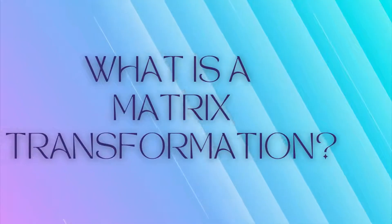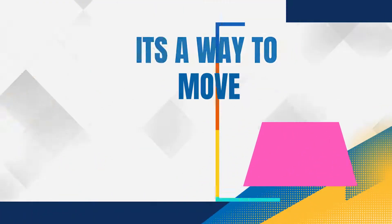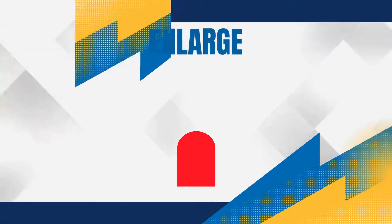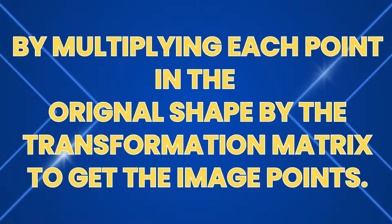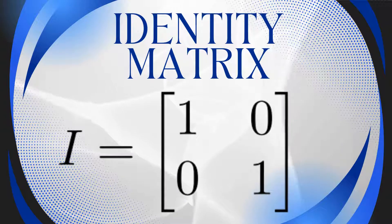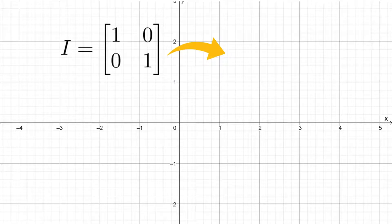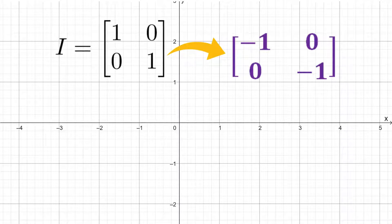What exactly is a matrix transformation? Simply put, it's a way to move, rotate, reflect, or resize shapes using a special grid of numbers called a transformation matrix. Instead of shifting each point one by one, we can use matrices to do all the work at once. This is the identity matrix — the starting point of all transformations. Think of it as the default mode of a shape. Every transformation matrix is just a clever modification of the identity matrix.